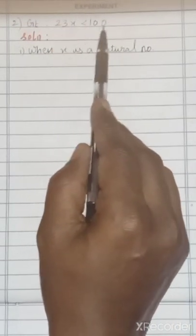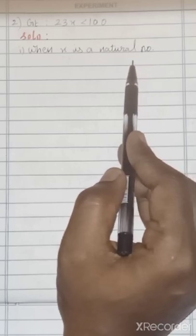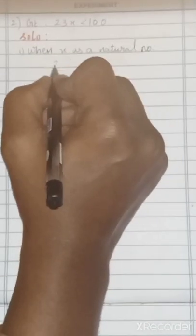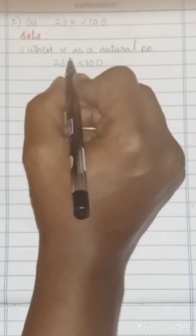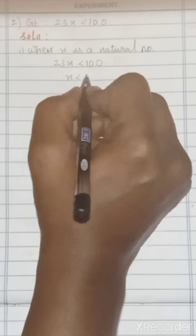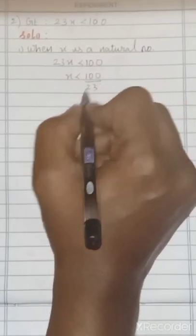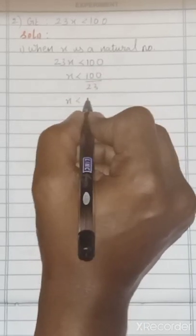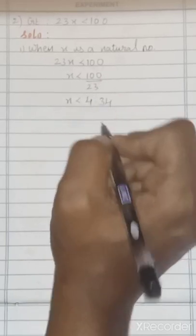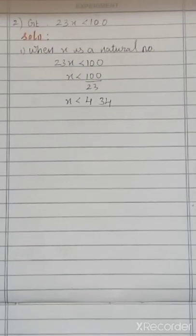Second question: solve 23x < 100 when (a) x is a natural number and (b) x is an integer. The inequality 23x < 100 gives x < 100/23, which is approximately 4.34. So x < 4.34.